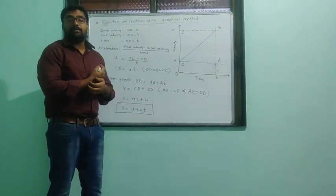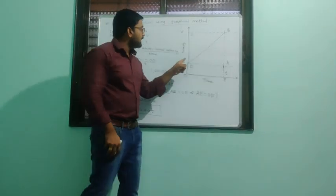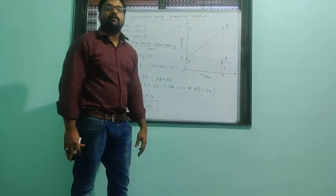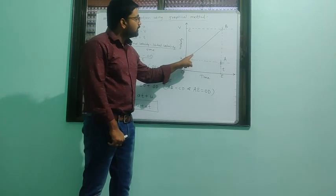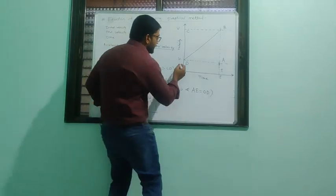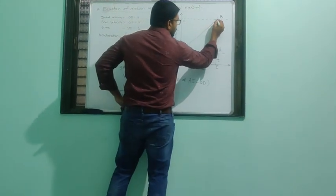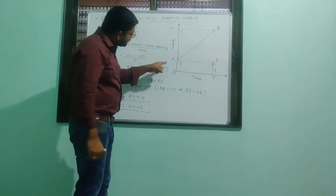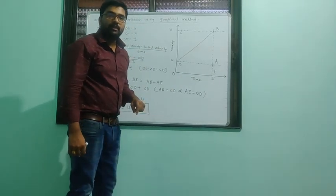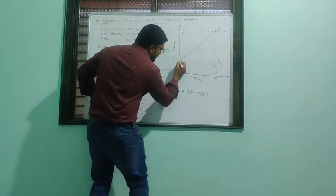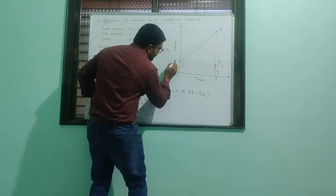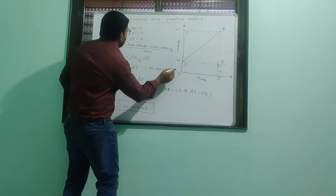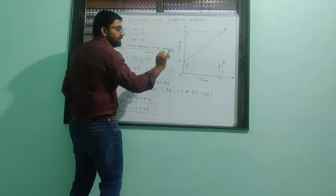We already studied that for uniform accelerated motion, the velocity-time graph is always a straight line. Here, velocity is on the y-axis and time is on the x-axis. The object starts from point D and ends at point B. Initially its initial velocity is U, represented by distance OD.